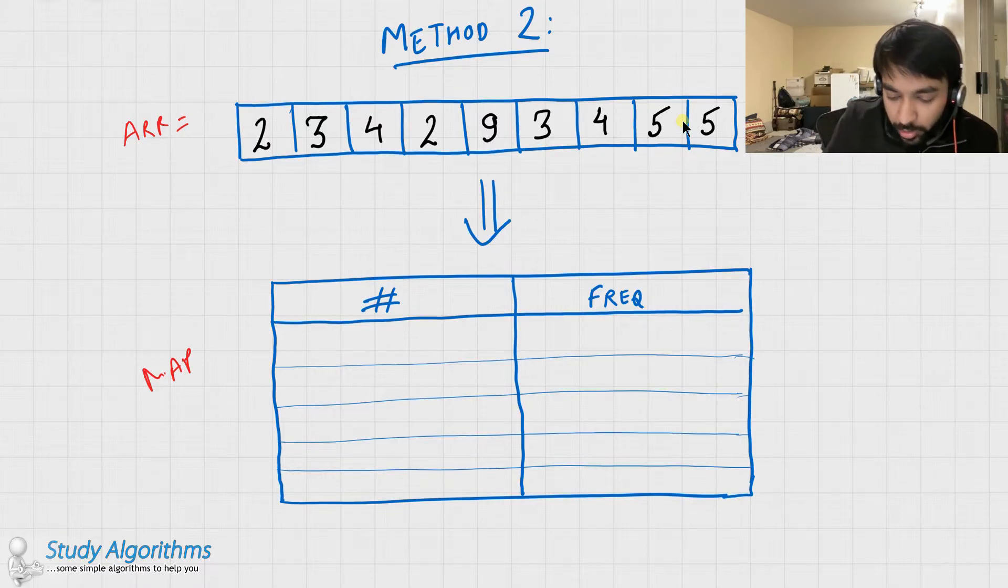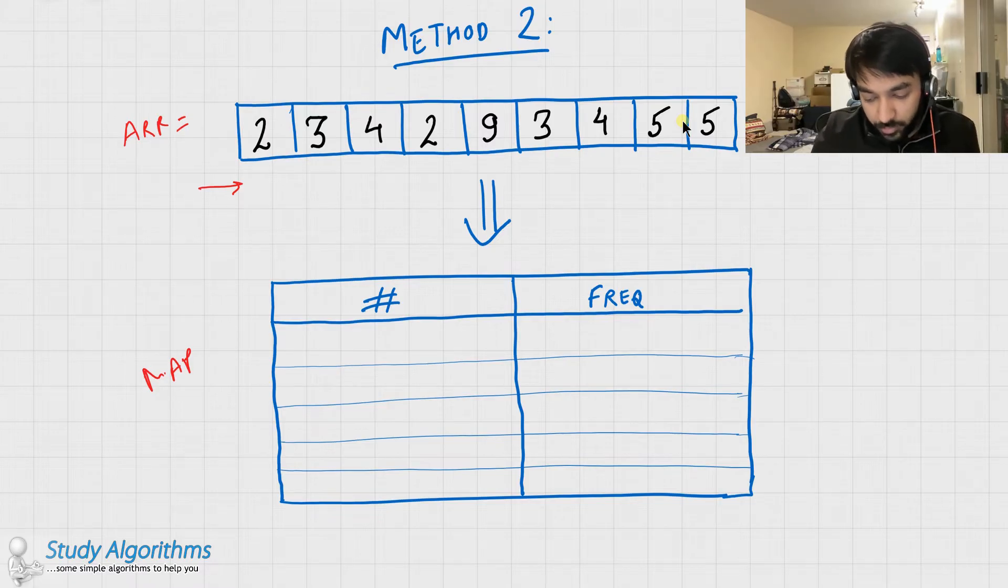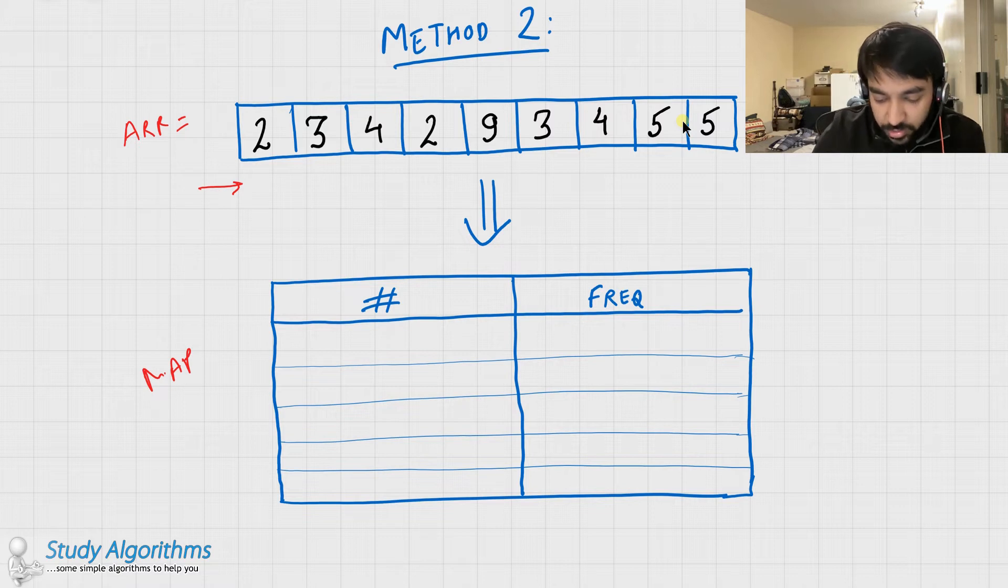...and we create a map that is storing the number and the frequency of each of the element. So what you can do is, you can start iterating the array from the beginning and go all the way up to the end, and just count the number of times when a number is occurring. So let us go through this method on a case-by-case basis.